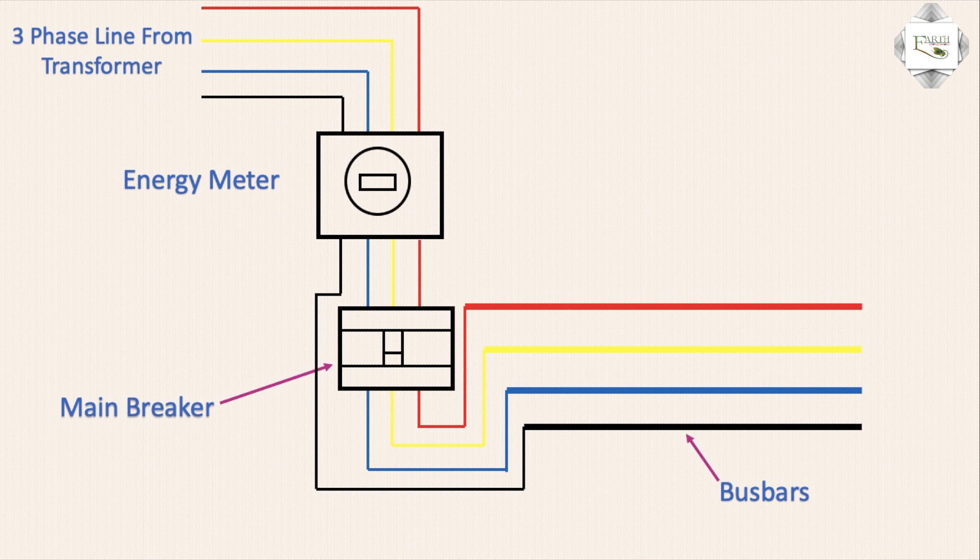The bus bar uses the manually controlled MCCB circuit breaker to turn the main line on and off.